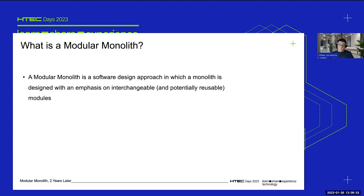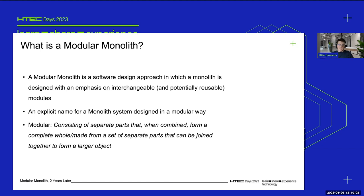First, what is a modular monolith? One definition: a modular monolith is a software design approach in which a monolith is designed with an emphasis on interchangeable and potentially reusable modules. Another definition: a modular monolith is an explicit name for a monolith system designed in a modular way. The definition of 'modular' is: consisting of separate parts that when combined form a complete whole. So we're talking about a system explicitly modularized into components that we can visually identify, which together comprise a larger system with the required set of features.